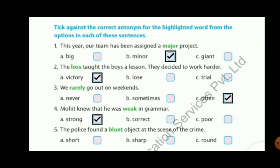Fifth sentence: 'The police found the blunt object at the scene of the crime.' The highlighted word is blunt; options are short, sharp, round — the antonym of blunt is sharp. So in summary: major→minor, loss→victory, rarely→often, weak→strong, blunt→sharp.